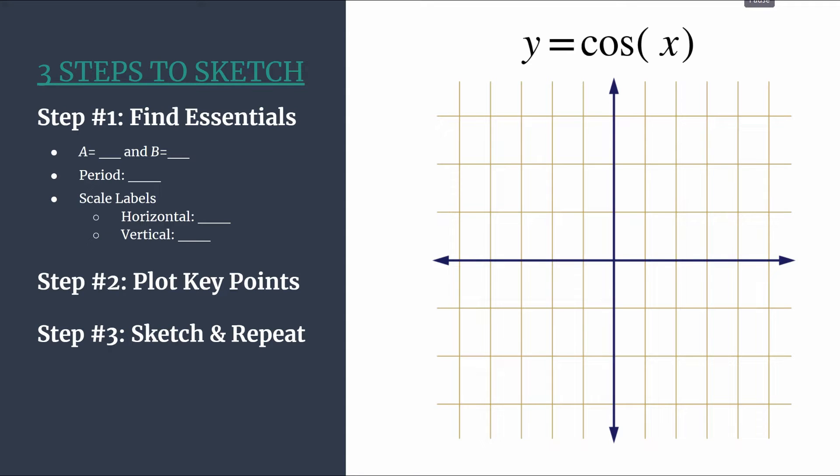We have our method outlined on the left and we have our grid on the right. So step one of our method is to find the essential information. This is really your prep work so that you know all of the pieces you're working with and can create a really nice neat and accurate graph. So the first of our essentials are identifying a and b.